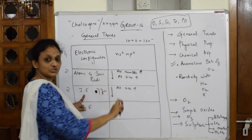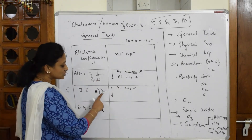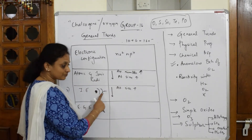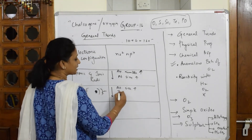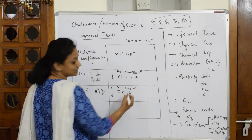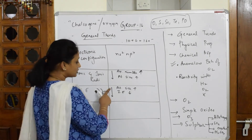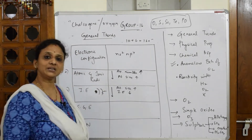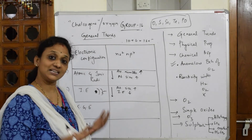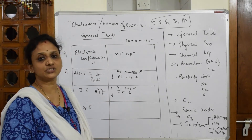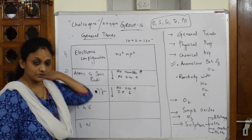Ionization enthalpy is the amount of energy required to remove an electron from an atom. When the size is larger, nuclear attraction is weaker, so ionization energy will be less. Therefore, as we go down the group, ionization enthalpy decreases — the larger the atom, the less energy is needed to remove the electron.